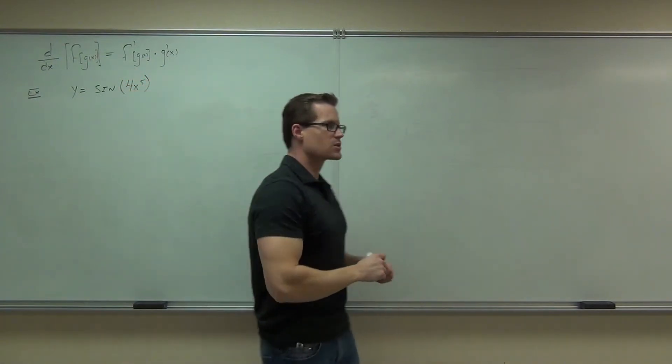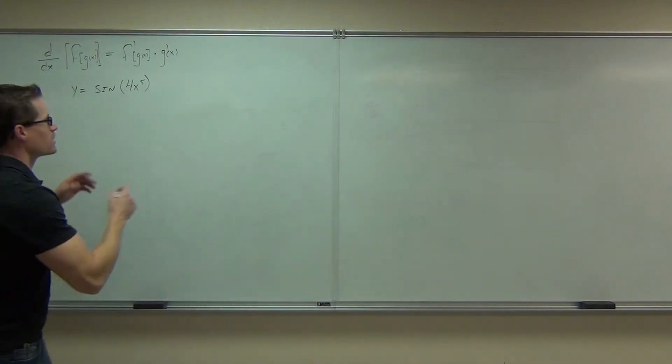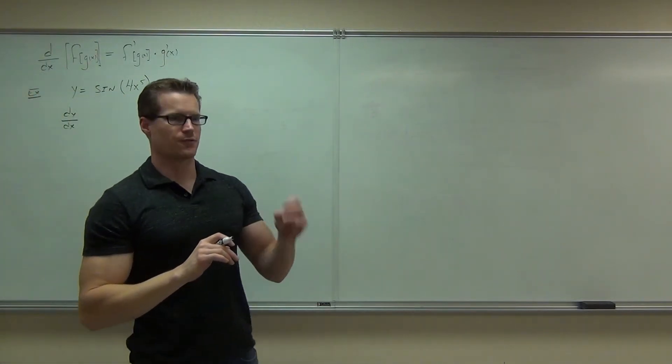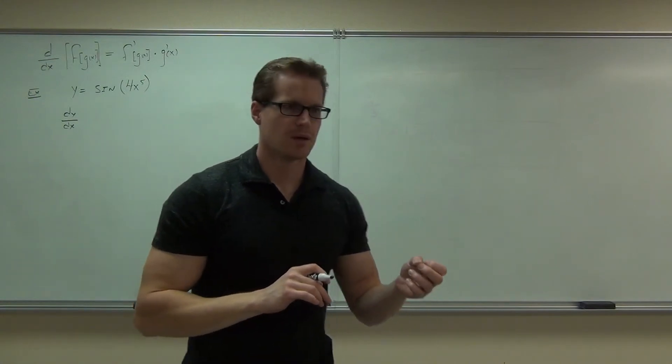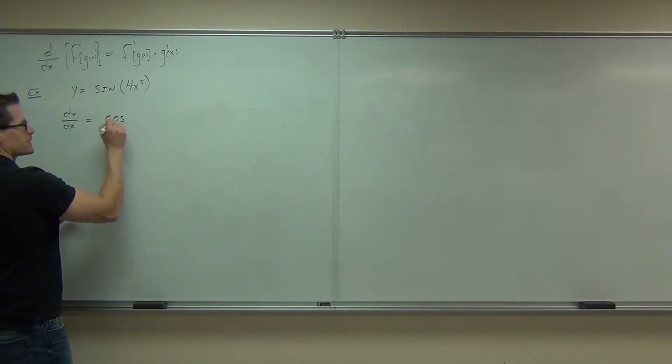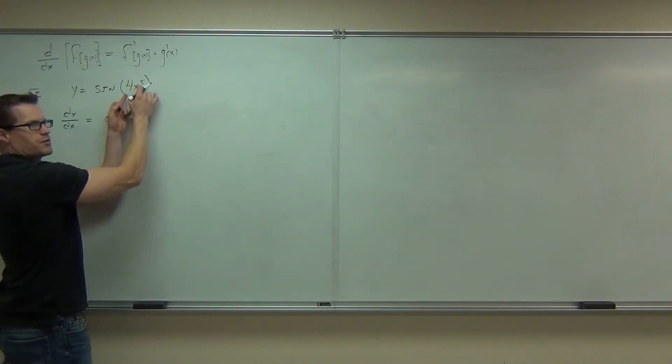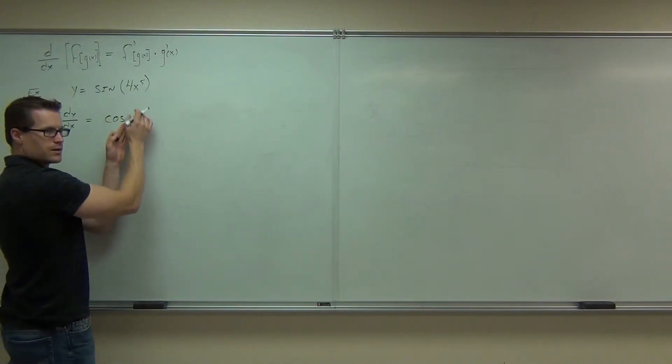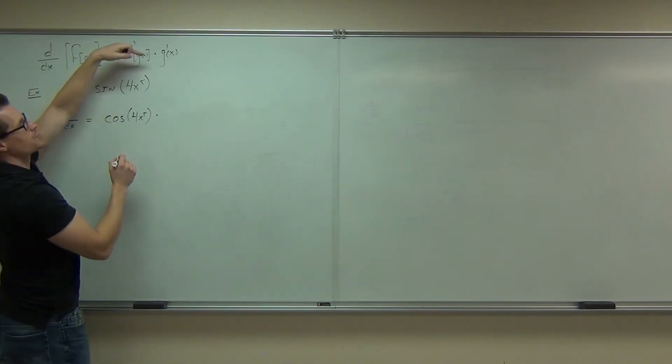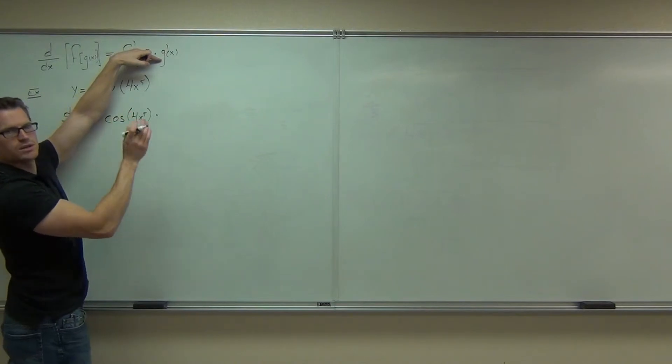That's a chain rule right there. So if we use the chain rule, the chain rule says this. It says in order to find dy/dx, you're going to take the derivative of the function, yes, but you're going to at first leave the inside of it alone. So what's the derivative, everybody, of sine? Cosine. So we do the cosine, yes. Do we take the derivative of 4x to the 5th right here? That's going to stay alone. That's this part. That's the g of x. That says 4x to the 5th. This says you don't even change g of x, and we didn't change g of x. Times, ah, the derivative of g of x. That's where you get the derivative of the inside.